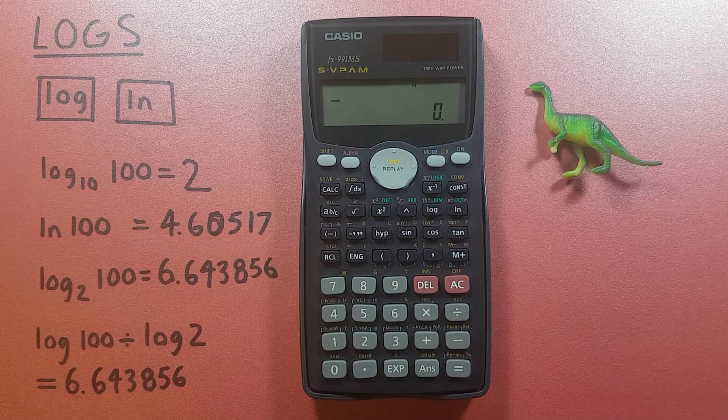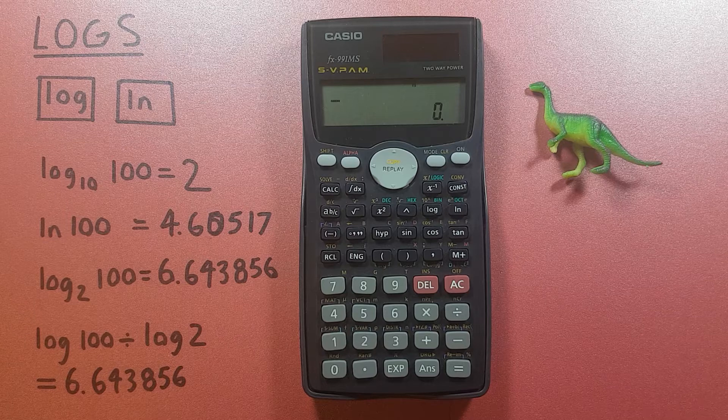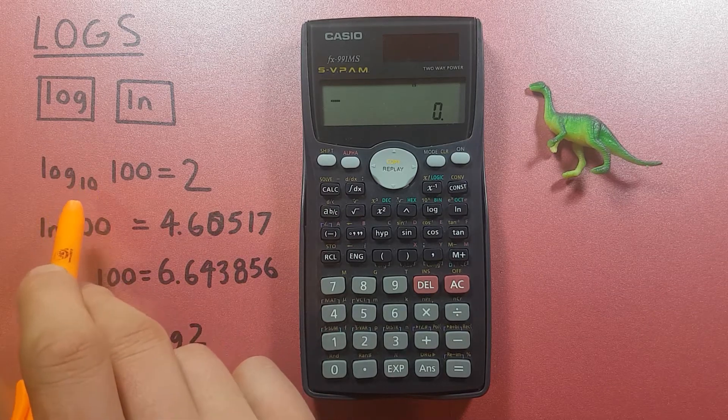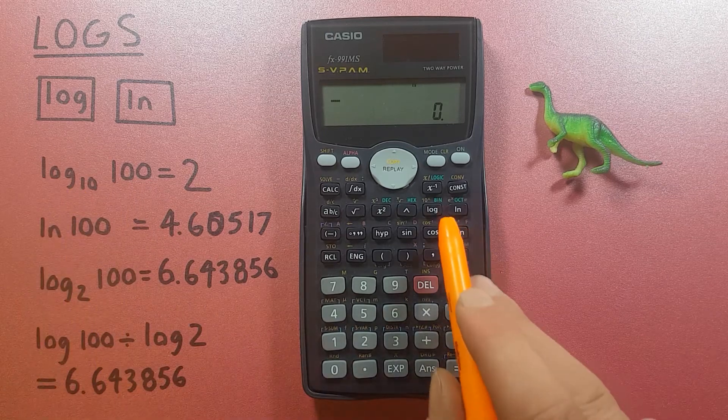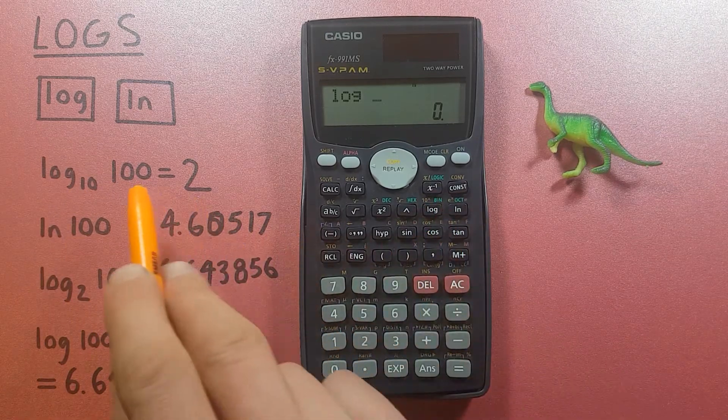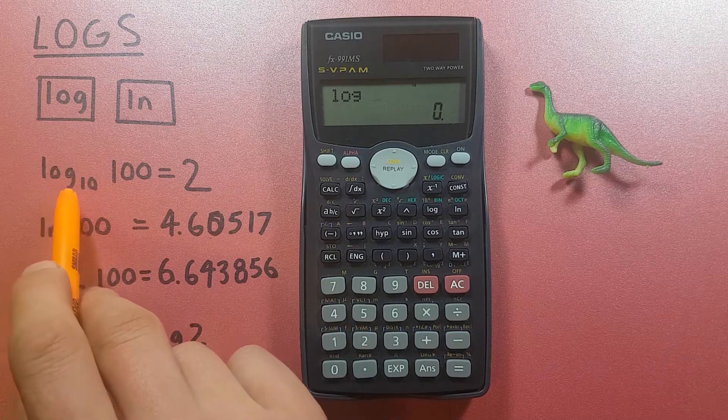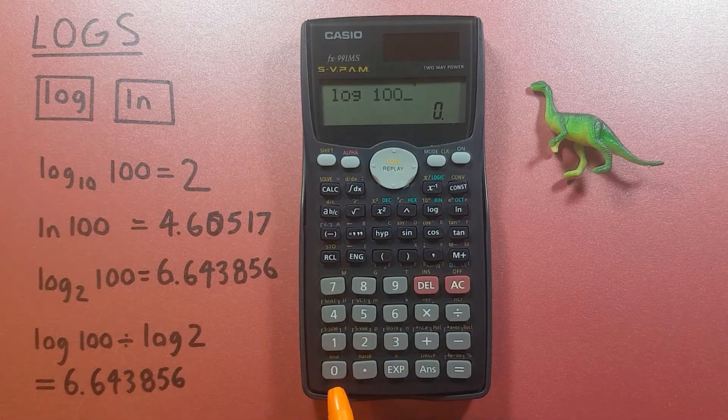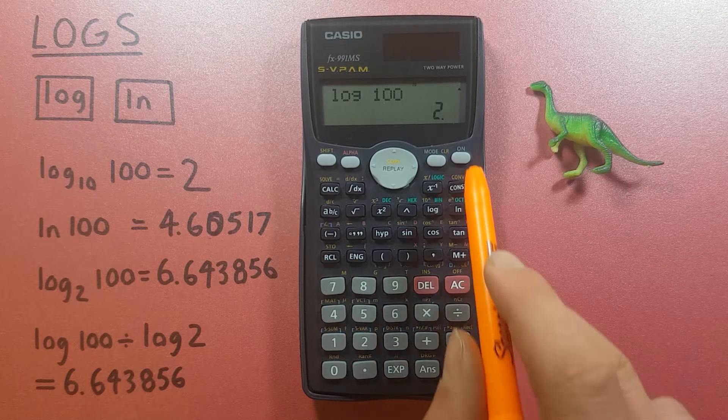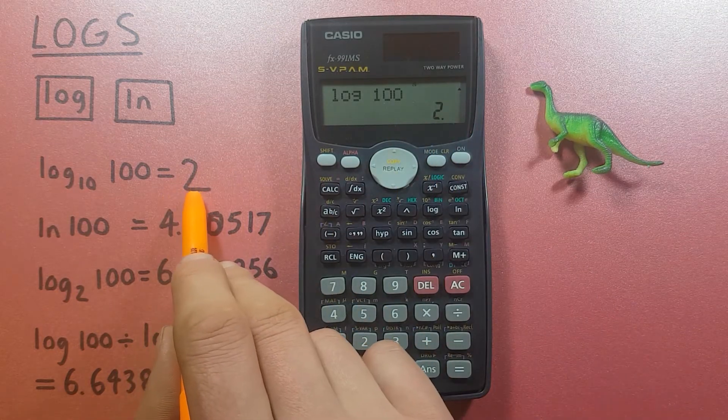Now the standard base on this calculator is log base 10, so if we want to find a log base 10 number all we have to do is press the log and then the number. In this case we'll do log base 10 of 100, so we have log 100 equals 2, which is correct.